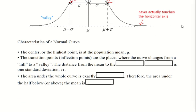Now let's do this again in words. The center, or the highest point, is at the population mean μ. The inflection or transition points are the places where the curve changes from a hill to a valley, from increasing at an increasing rate to increasing at a decreasing rate. The distance from the mean to the inflection point, or the transition point, is one standard deviation. This one is true for every distribution we're going to talk about: the area under the whole curve is exactly 1.